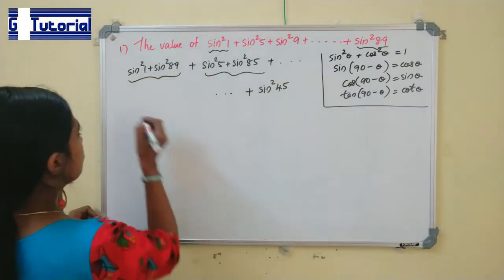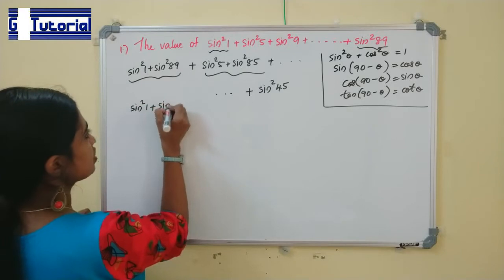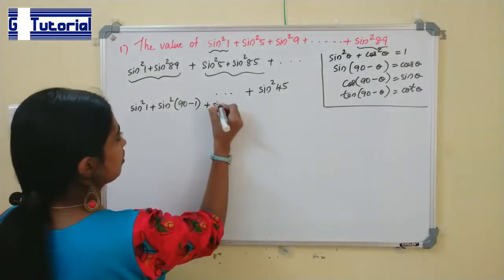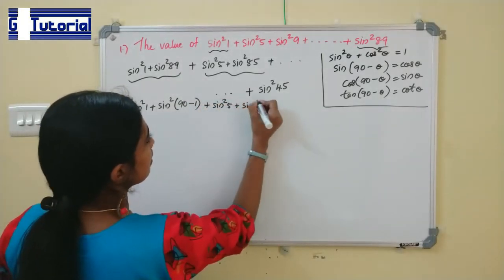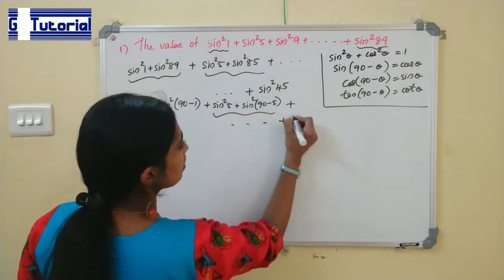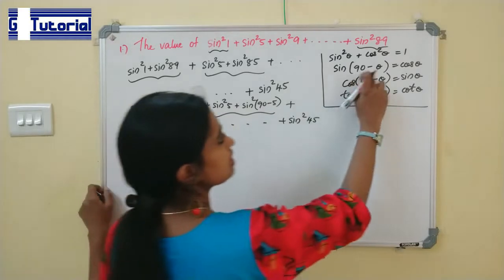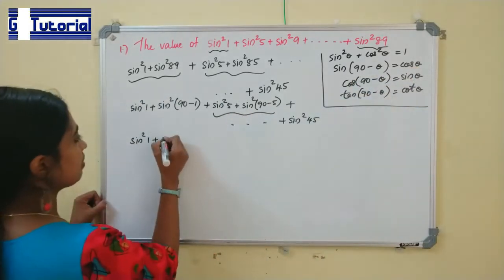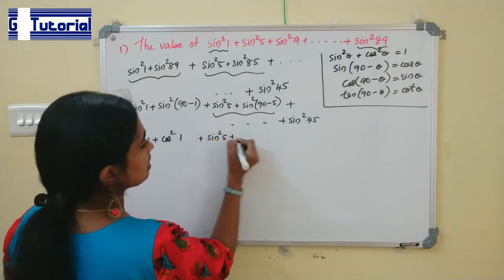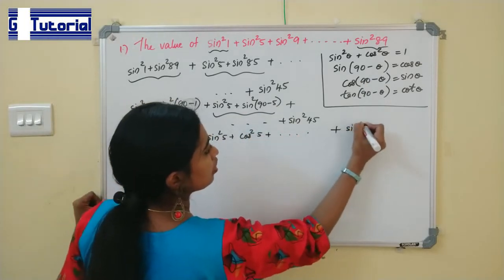The first pair: sin²1 + sin²89 can be written as sin²1 + sin²(90° - 1°). The second pair: sin²5 + sin²(90° - 5°). And so on, plus sin²45. Since sin(90° - θ) = cosθ, each paired term becomes sin²θ + cos²θ.